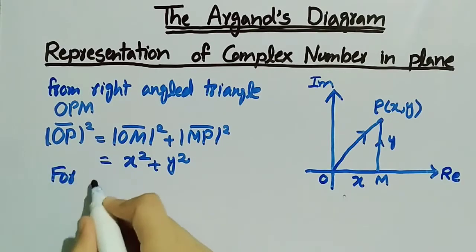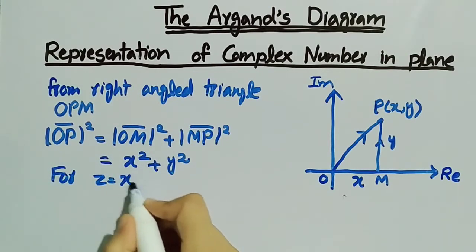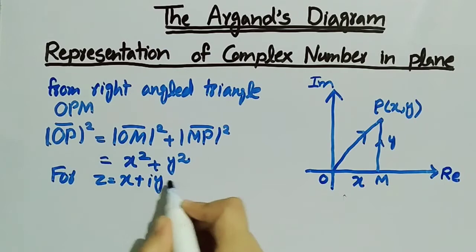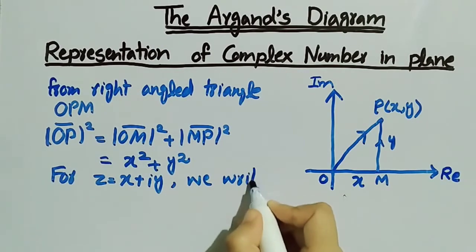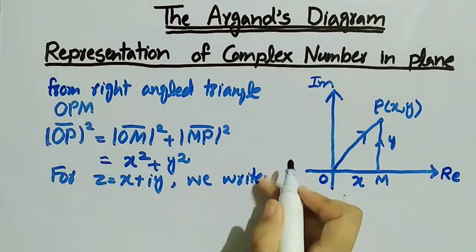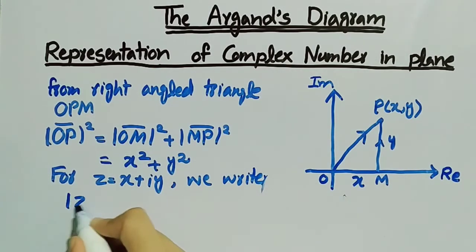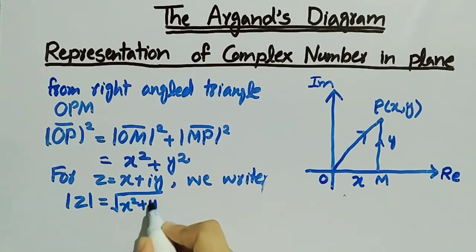For z = x + iy, we write |z| = √(x² + y²) and call |z| the modulus.